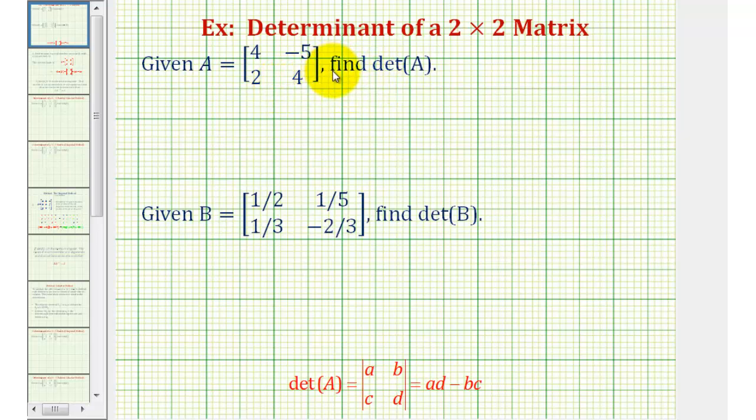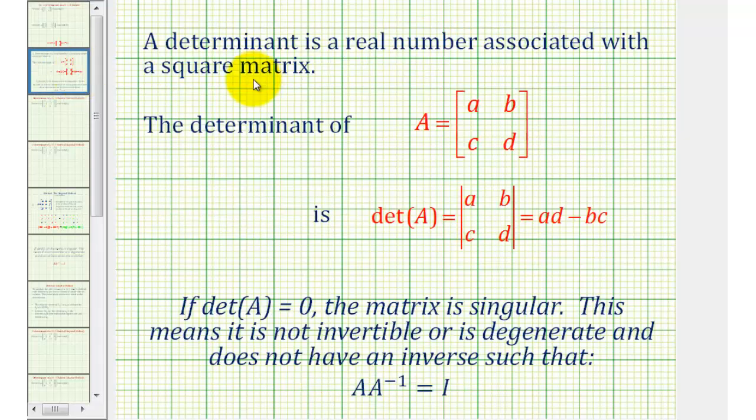Welcome to two examples of finding the determinant of a two by two matrix. A determinant is a real number associated with a square matrix.